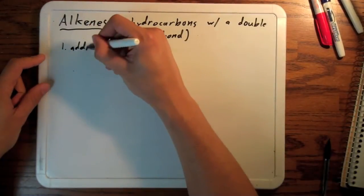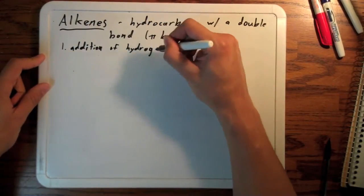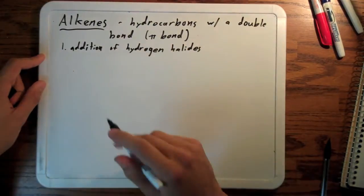Yo, we're back. We already covered addition of hydrogen halides to alkenes. What else can we do with alkenes?